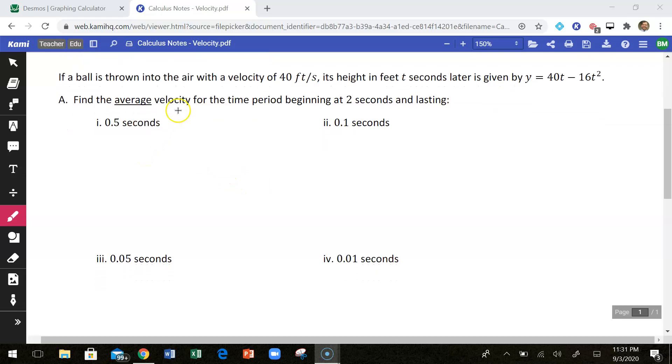So we have a ball being thrown into the air. The initial velocity is 40 feet per second, and then we have a function that gives its height t seconds later. So y would be the height is equal to 40t minus 16t squared. We want to find the average velocity of this ball for the time period beginning at two seconds and then lasting for these lengths of time.